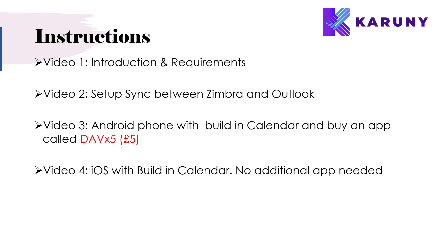So to follow these instructions there are four videos. This one is the first — introduction and requirements. The second video will show you how to synchronize between Zimbra and Outlook. The third video is for Android users showing how to use the app DAVX5 to synchronize their Android calendar up to Zimbra, and because you're already synchronizing Zimbra and Outlook you'll also get it in Outlook. The fourth video covers iOS — how to use the built-in calendar and set up the synchronization. I don't have an iOS device at the moment so I'll need help with some screenshots, but hopefully you'll get it. See you in video two where we set up the sync between Zimbra and Outlook.